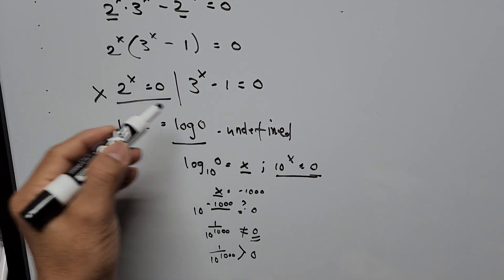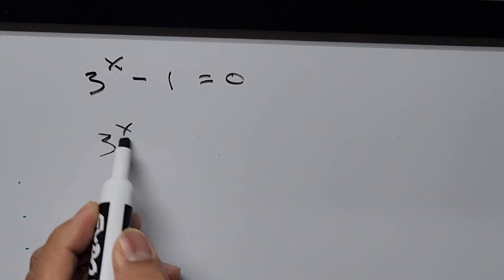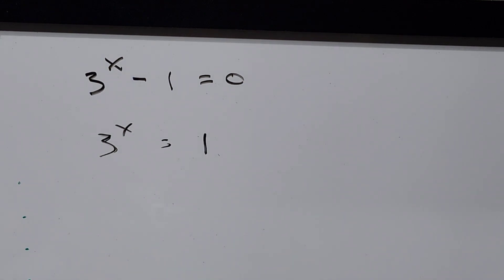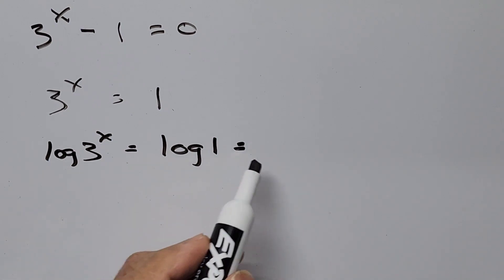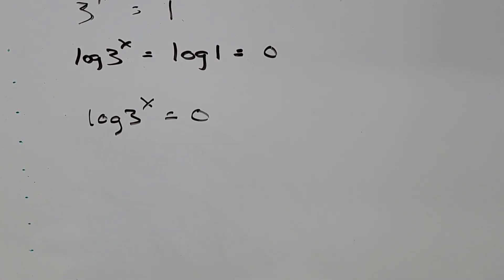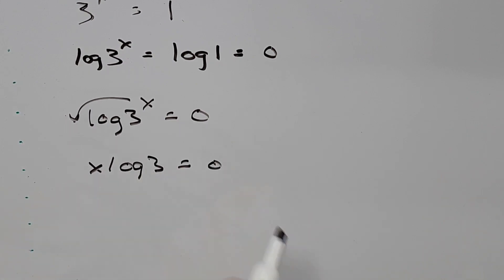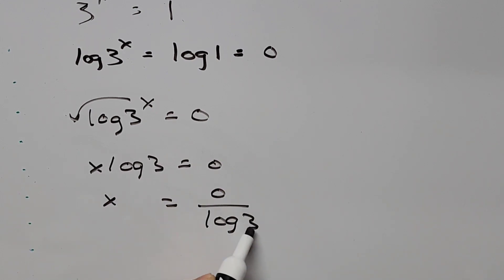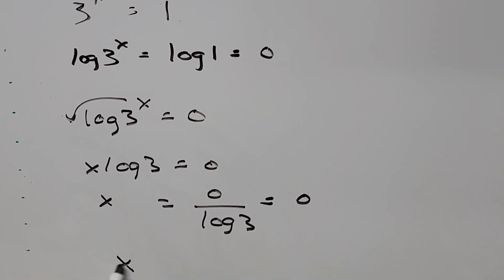For the second case, 3 to the power of x minus 1 equals zero, so 3 to the power of x equals 1. Taking the logarithm of both sides: log of 3 to the power of x equals log of 1. Now, log of 1 (common logarithm) equals zero. Bringing down the exponent: x times log of 3 equals zero, so x equals 0 divided by log of 3, and zero divided by any number is zero. Therefore, x equals 0.